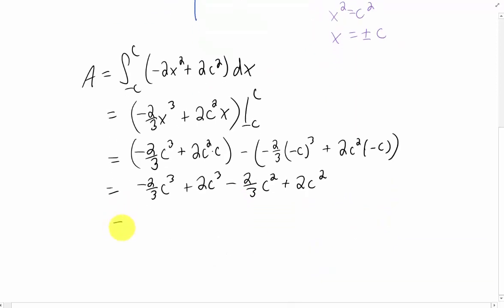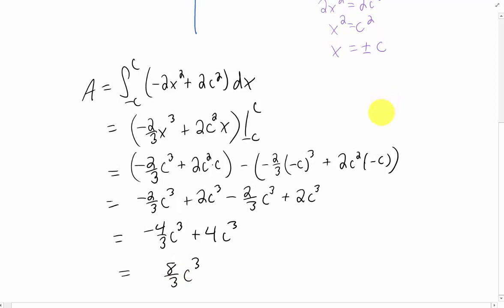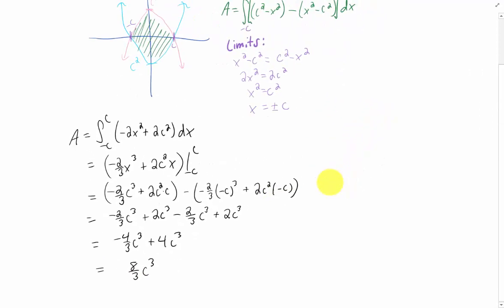Combining our terms and correcting the fact that I wrote squares instead of cubes there gives us this. We would need to find a common denominator between negative four-thirds and four. That would mean changing this term to twelve-thirds, which is going to give us eight-thirds C cubed. That is the area between these two curves that we drew above.